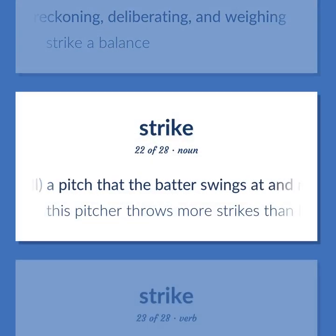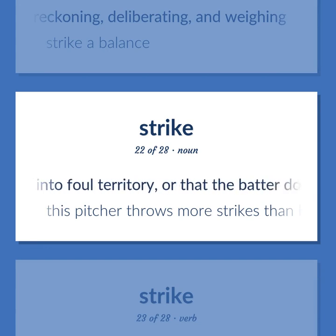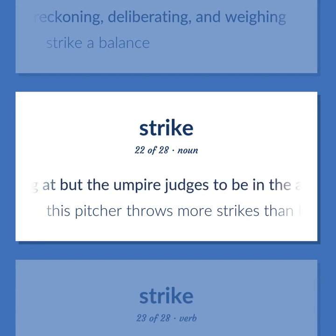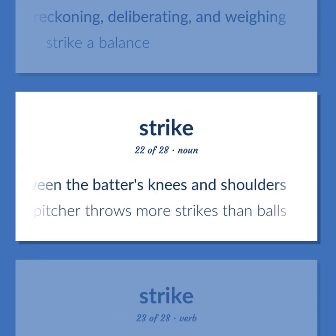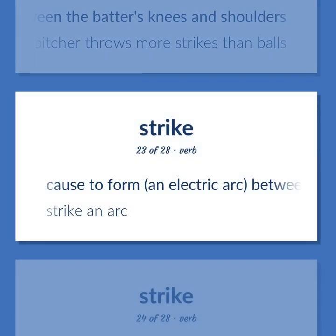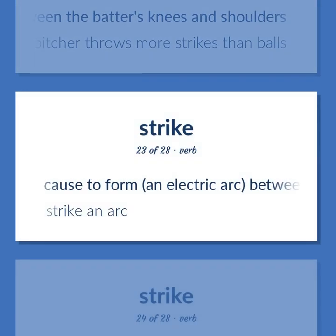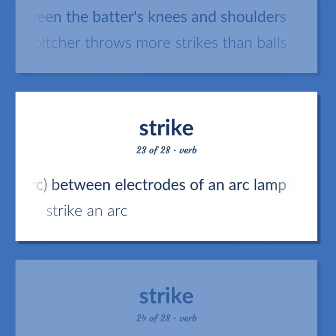Baseball: A pitch that the batter swings at and misses, or that the batter hits into foul territory, or that the batter does not swing at but the umpire judges to be in the area over home plate and between the batter's knees and shoulders. This pitcher throws more strikes than balls. Cause to form an electric arc between electrodes of an arc lamp — strike an arc.